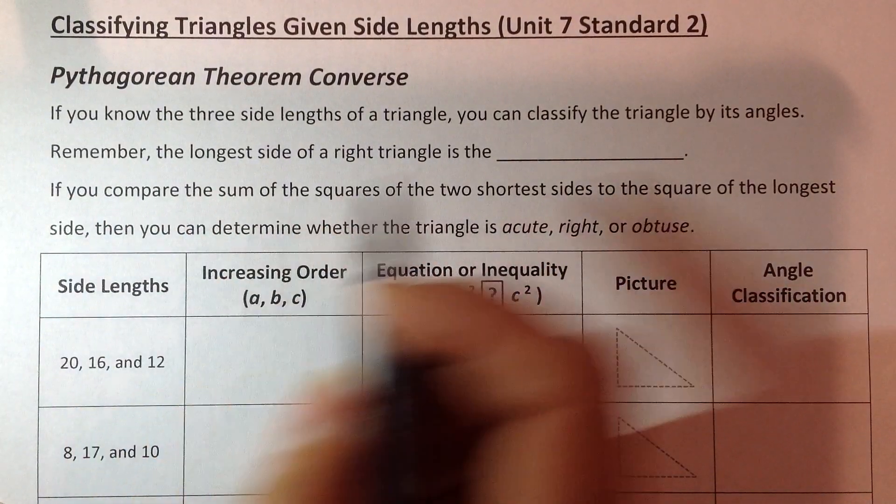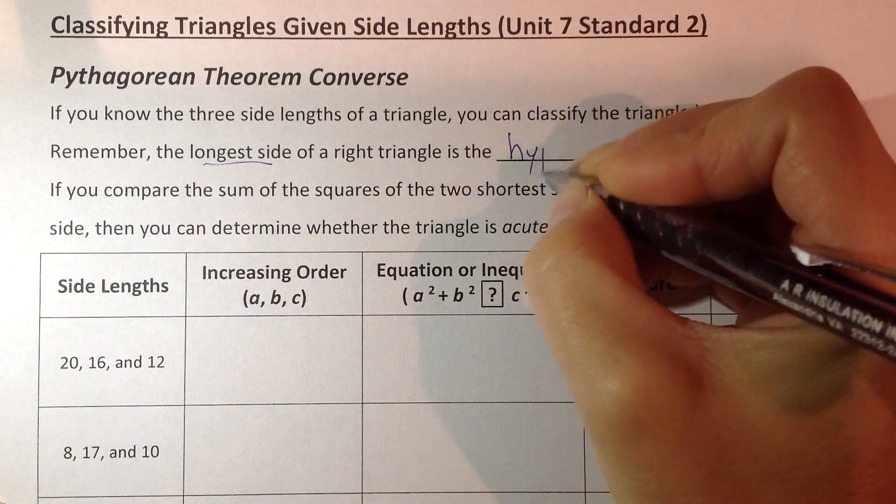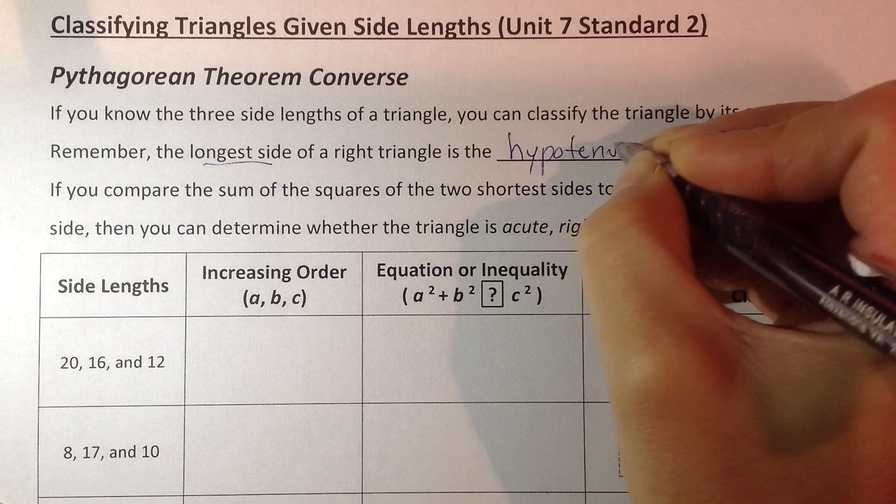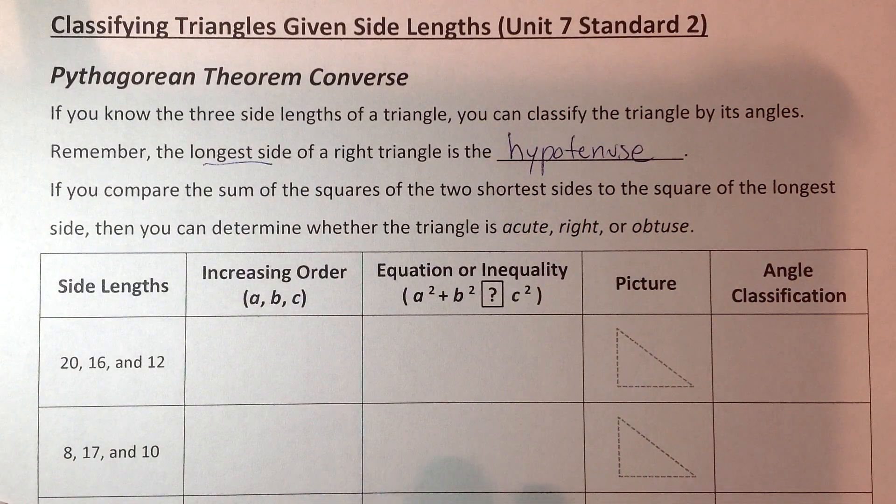To do this, we have to remember that the longest side of a right triangle is the hypotenuse, which in your Pythagorean Theorem we're going to call that C.